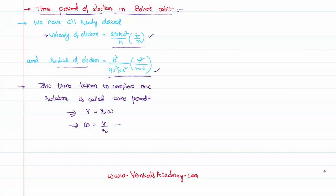We can simply substitute them to get the answer. That is, v value 2πke² by h, z by n, divided by r value h² by 4π²ke², n² by mz.